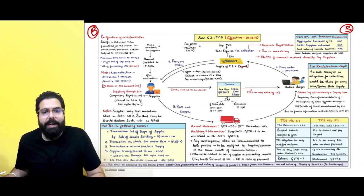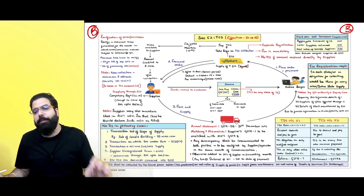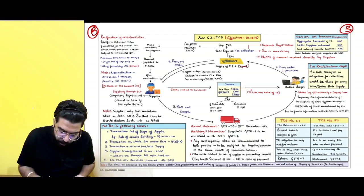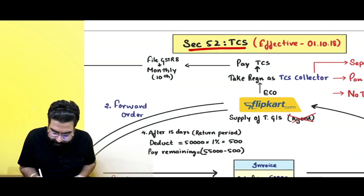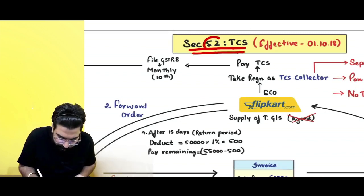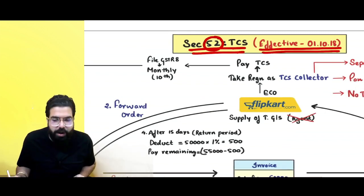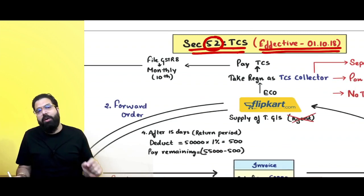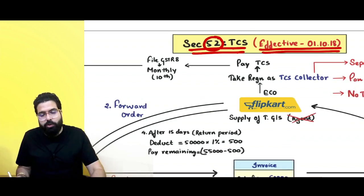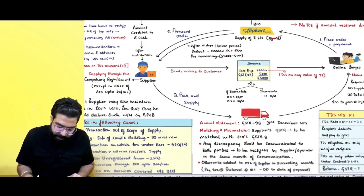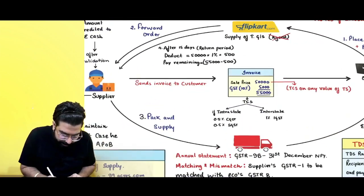Let's start the chapter of TCS. TCS ka provision is under Section 52. TCS ka provision is effective from 1st of October 2018.